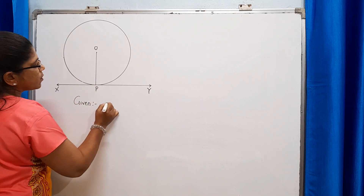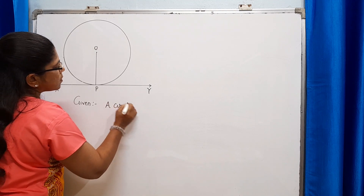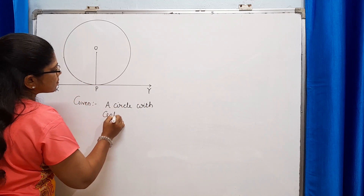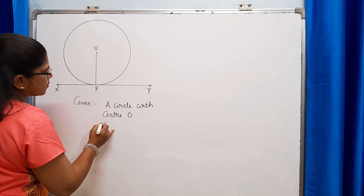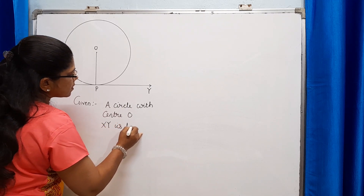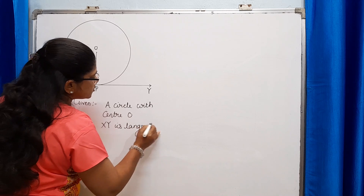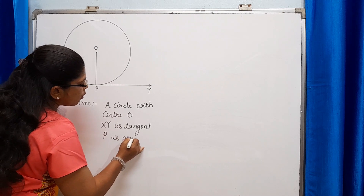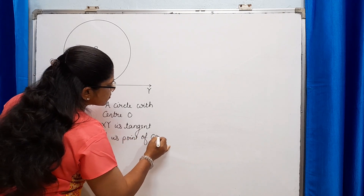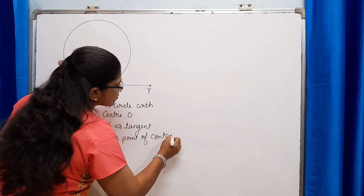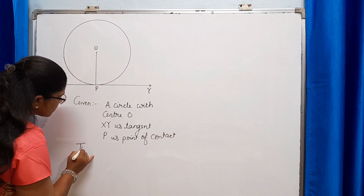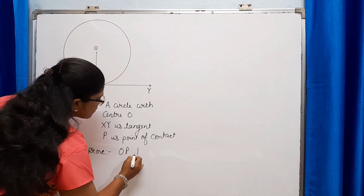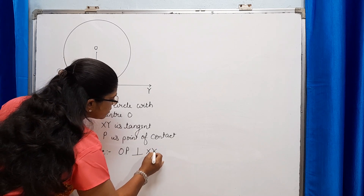Given: we have a circle with center O. XY is the tangent and P is the point of contact. To prove: OP is perpendicular to XY.